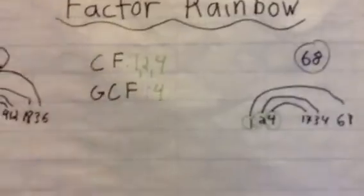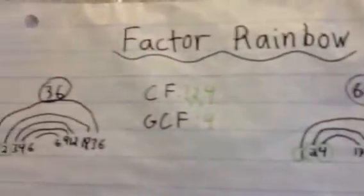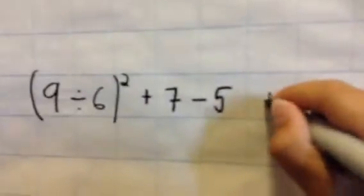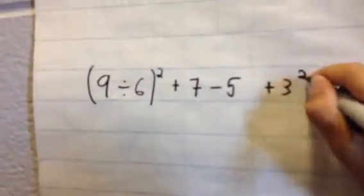Now we're going to do order of operations. Our expression is going to be 9 in brackets divided by 6 in brackets to the power of 2, plus 7 minus 5, plus 3 to the power of 2.